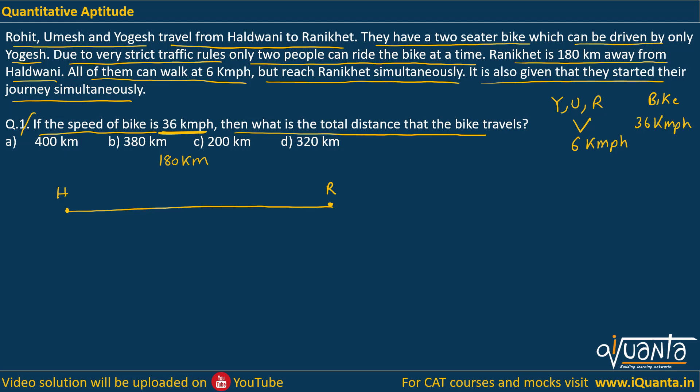The most important point to consider is that they started their journey simultaneously and reached simultaneously. They start from Haldwani. Only Yogesh can drive the bike, so he will take a person with him — let it be Rohit. So Yogesh and Rohit go on the bike, and Umesh walks on foot. Now if Yogesh and Rohit keep traveling on the bike they'll move faster than Umesh and reach earlier, but we have to make sure all of them reach Ranikhet simultaneously.